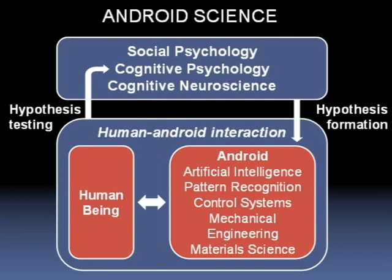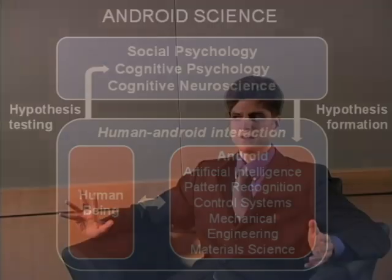using engineering technologies and computer science technologies from artificial intelligence, pattern recognition, control systems, material science, and so on, and look at the interaction with a human being and see how true to life it is. The thing about embodying the behavior in the android is that if it doesn't measure up, it's immediately apparent because of the uncanny valley.